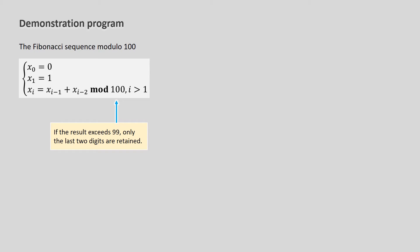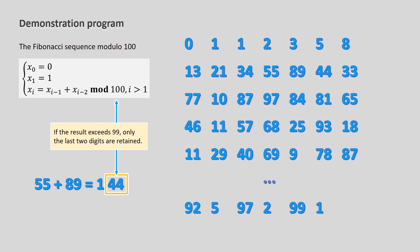The demonstration program calculates the Fibonacci Numbers Modulo 100. The first two terms of this sequence are 0 and 1, and each of the subsequent terms is the sum modulo 100 of the two previous ones. This sequence is periodic with a period 300.